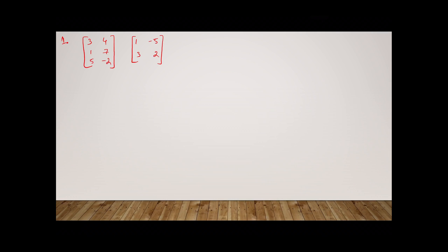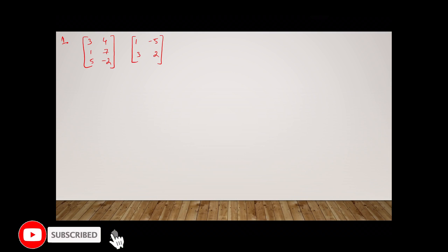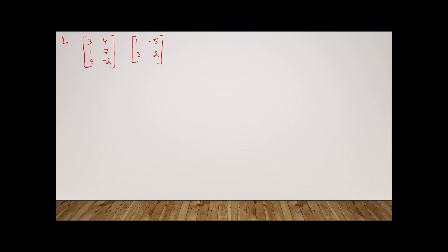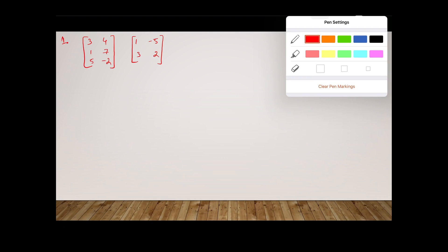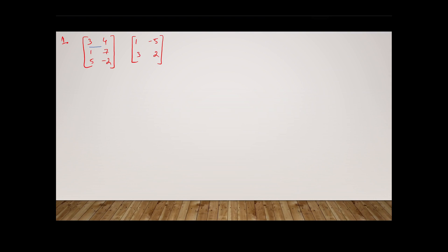We're going to understand matrix multiplication with the help of this example. Remember, when multiplying two matrices, we take every row and multiply it with every column. So I'm going to take the first row and multiply it with both columns one by one. The first thing is to multiply row one with column one.